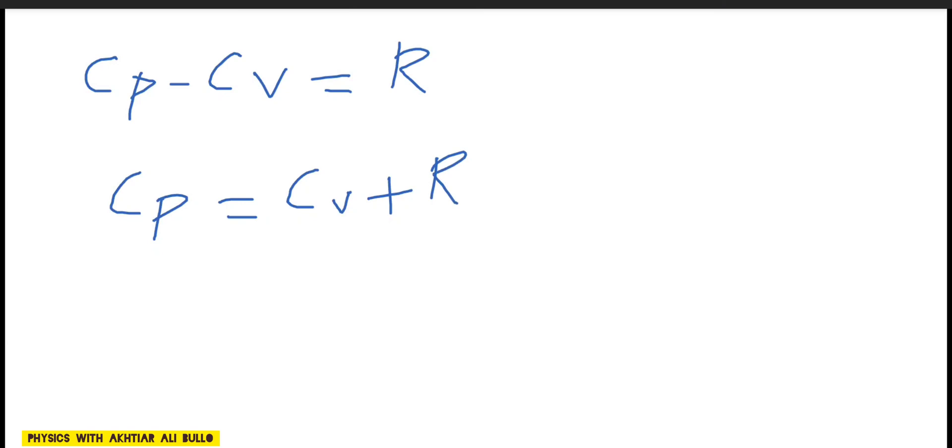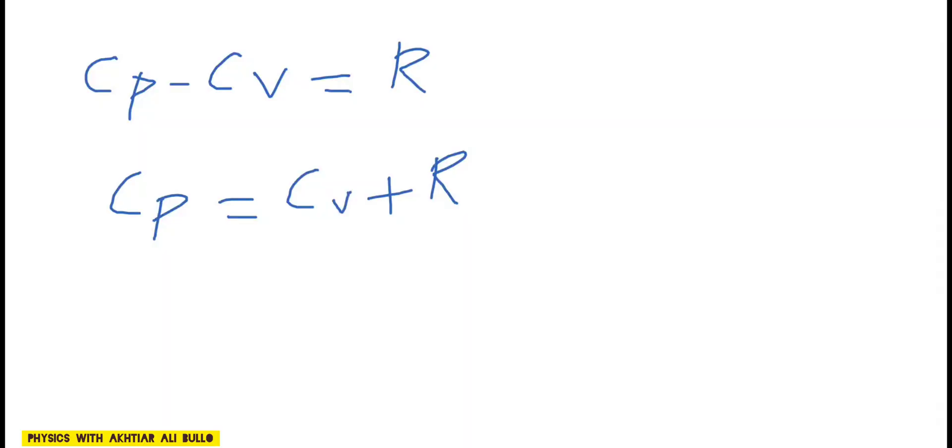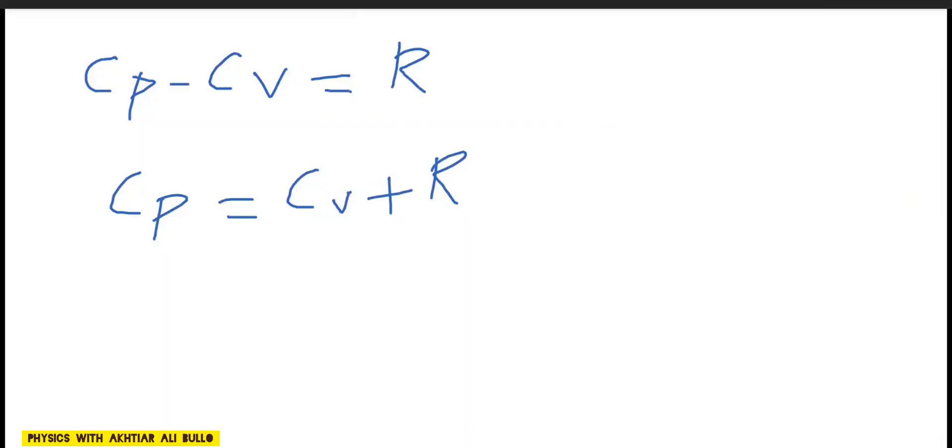As CV is obtained as 5R upon 2, by putting the value, CP will be equal to 5R upon 2 in place of CV. So, 5R upon 2 plus R.